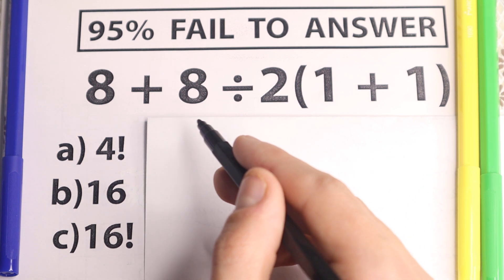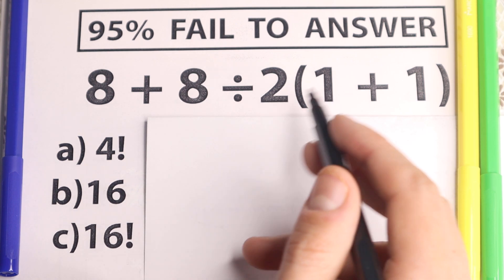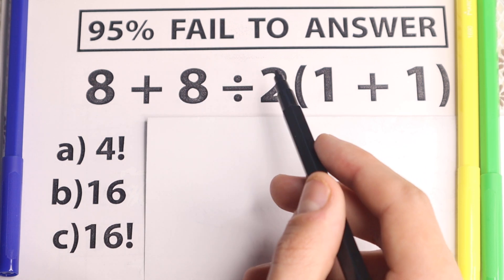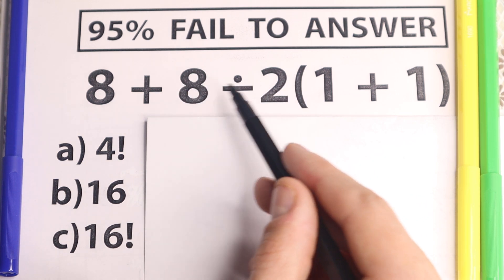So here is our problem: 8 plus 8 divided by 2 and in parentheses 1 plus 1. So here is maybe the main question I guess, do we do division first, then addition, then multiplication or do we do addition first, division, multiplication or do we do multiplication, addition, division.